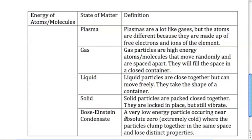The Bose-Einstein condensate is a low-energy particle occurring at nearly absolute zero temperature - for our purposes, that's extremely cold. The particles clump together in the same space and lose distinct properties. Scientifically speaking, this has only been done with a few different types of elements. They lose their distinct properties, which means they look like just one glob or blob of something.